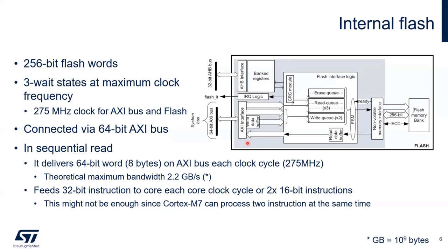With sequential reads, there is a theoretical bandwidth of 2 gigabytes per second. In a real application we sometimes need to jump to different parts of memory, which introduces some delay. We can also feed one 32-bit instruction to the core each clock cycle, since the core usually runs at twice the frequency of the AXI bus — meaning one 32-bit instruction or two 16-bit instructions being fetched per cycle.